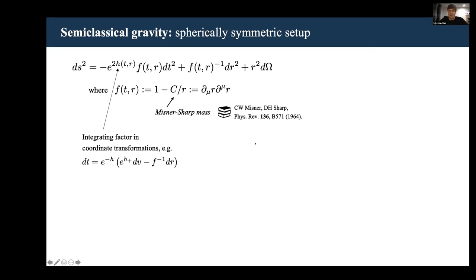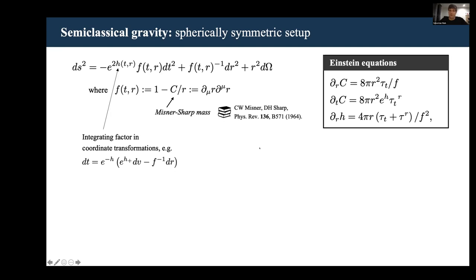With this setup, you can write the Einstein equations as three differential equations for those two metric functions, c and h, where on the right-hand side, these tildes that appear are just effective energy momentum tensor components. These are really just energy momentum tensor components rescaled by some factors of e to the power of minus h.